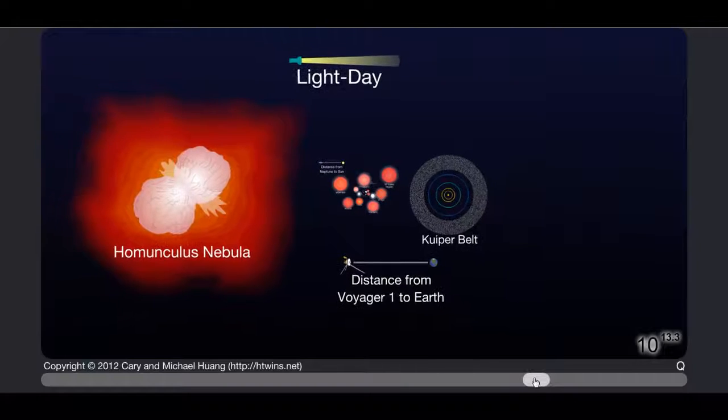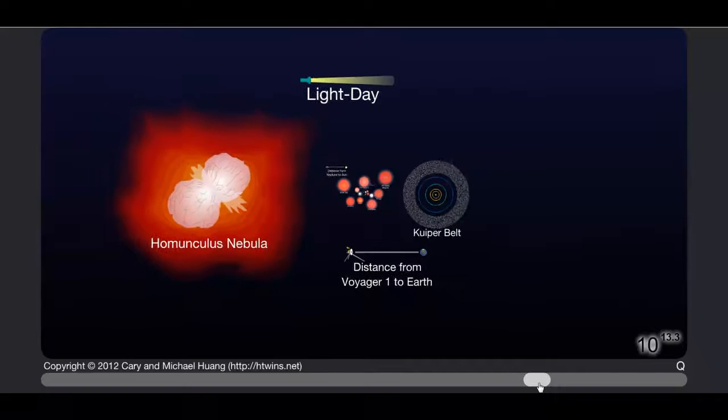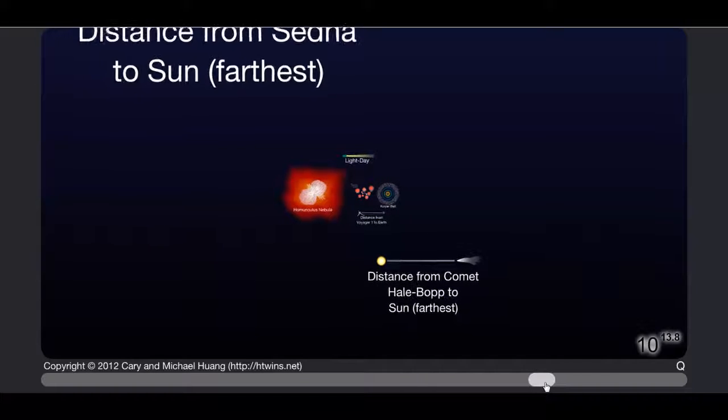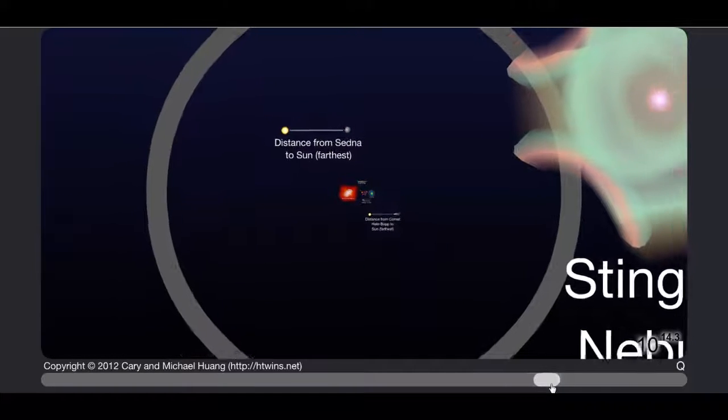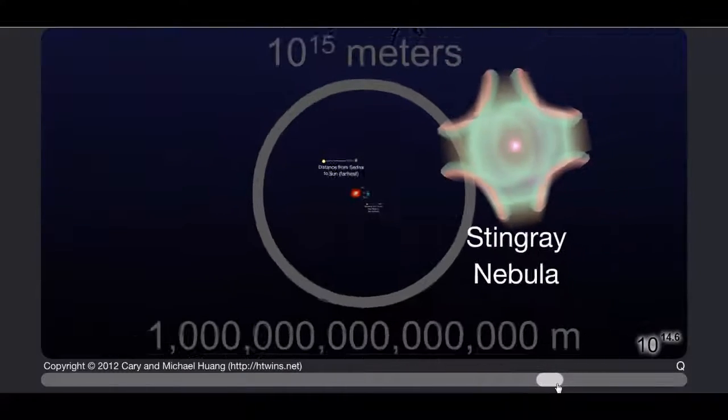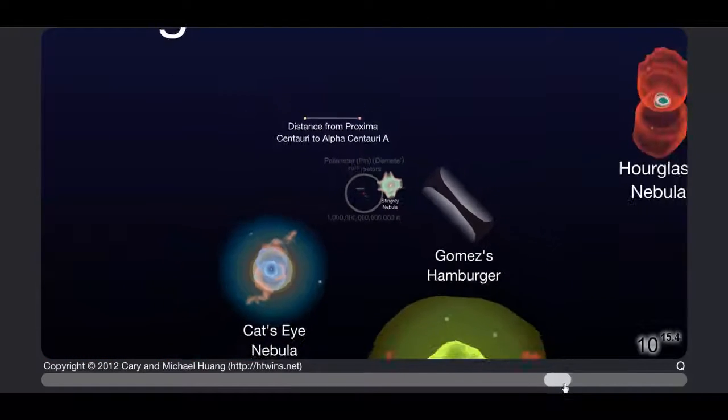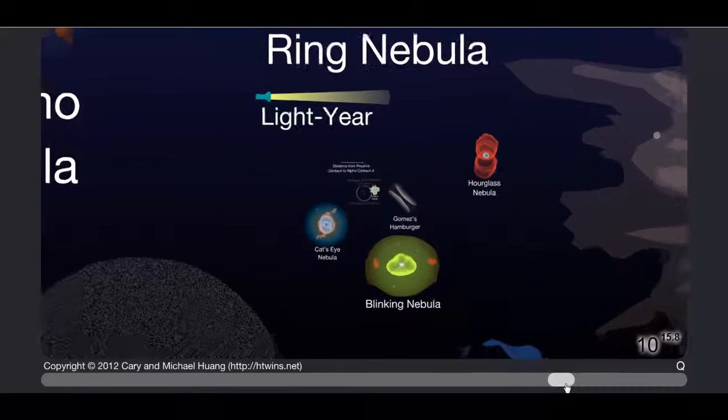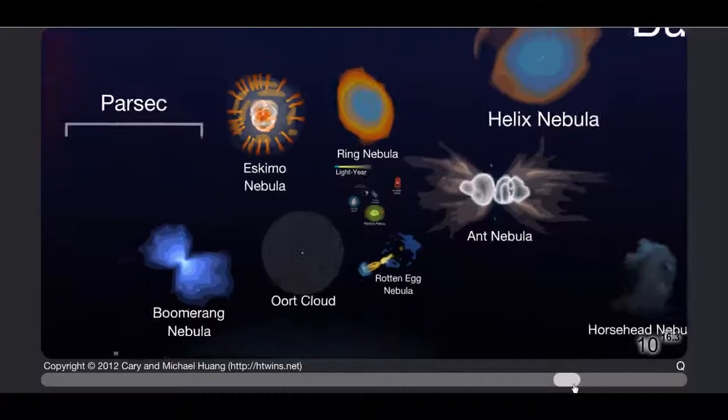What in the world is a Homunculus nebula? I don't know. Light day, I don't know what that means either. Oh a light day instead of a light year, wow. Distance from comet Hale to sun farthest. Distance from sun to furthest. Wow we are way out here. Stingray nebula. Nebulae, trying not to go too slow but I'm trying to get the effect at the same time. Definitely go check the site out because this is amazing. A light year, there we go. A Blinking nebula, an Hourglass nebula, a Cat's Eye nebula. A Helix nebula, Ant nebula, an Oort cloud.